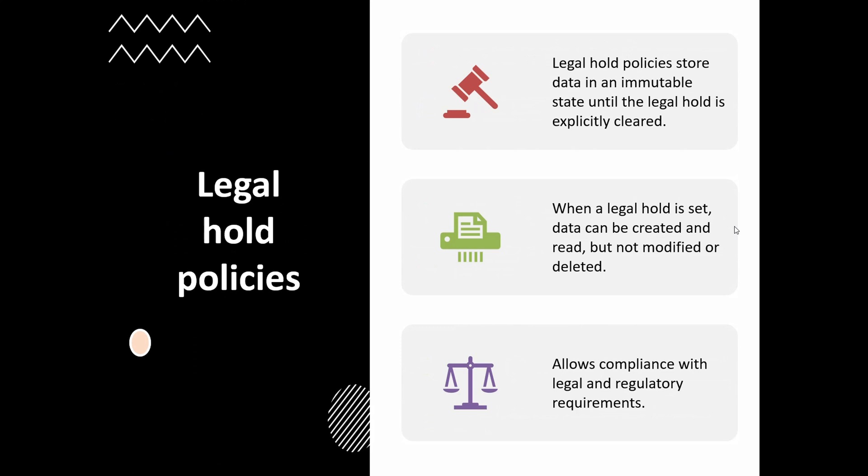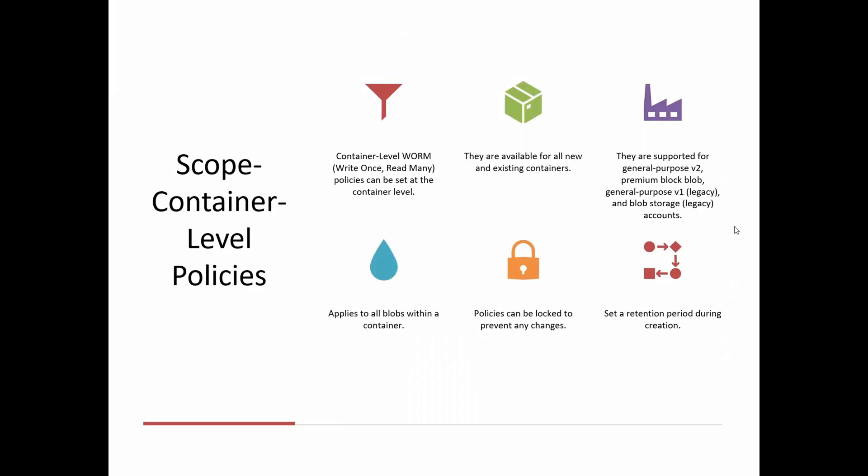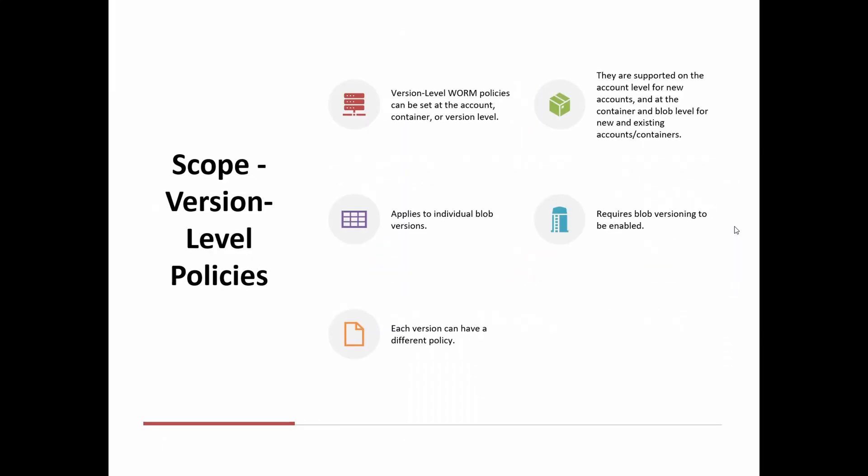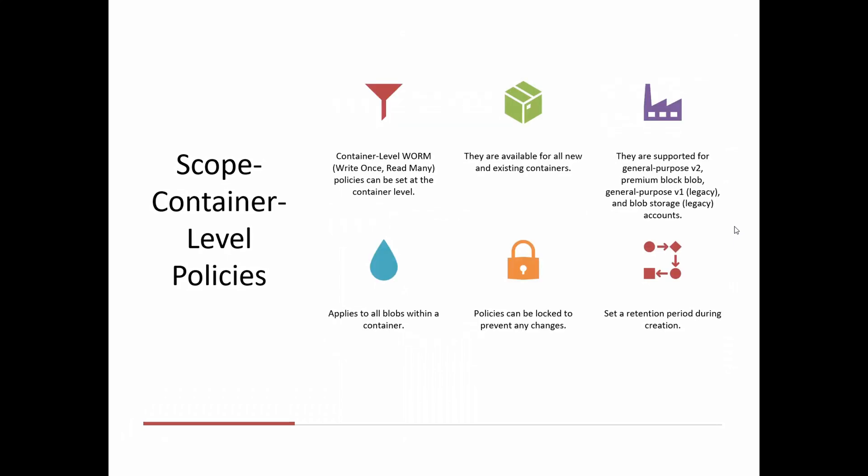Both of these policies are applied at different scope levels. There are two different scopes: container level policies and version level policies. Container level policies support WORM — write once, read many — and this policy is applied at the container level, which means once the policy is applied at the container level, it is automatically applied on all the blobs within that container.